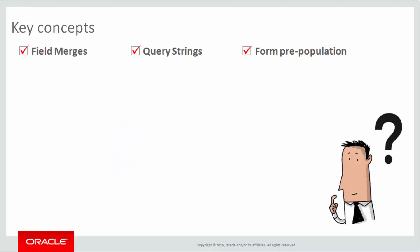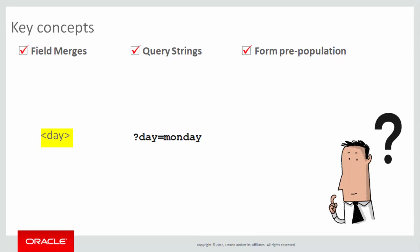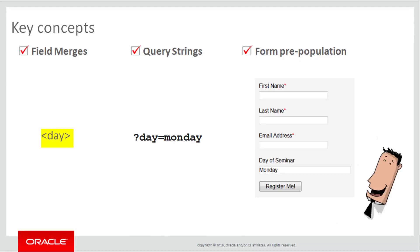Are you wondering how these concepts relate to one another? In Oracle Eloqua you can create field merges that display query string values such as the word Monday. Then you can pre-populate forms like this.